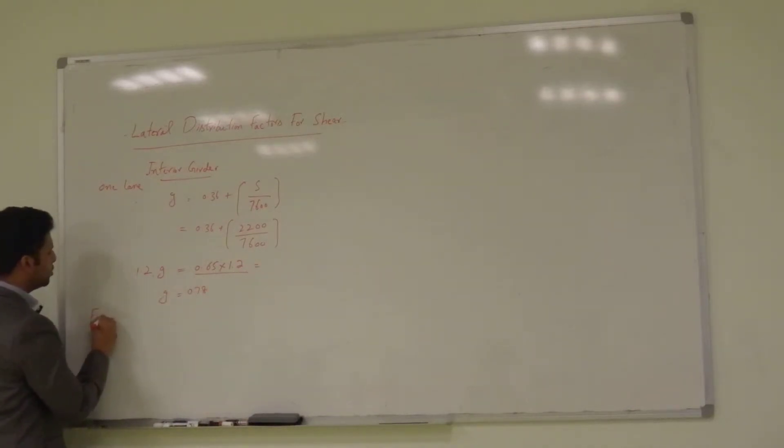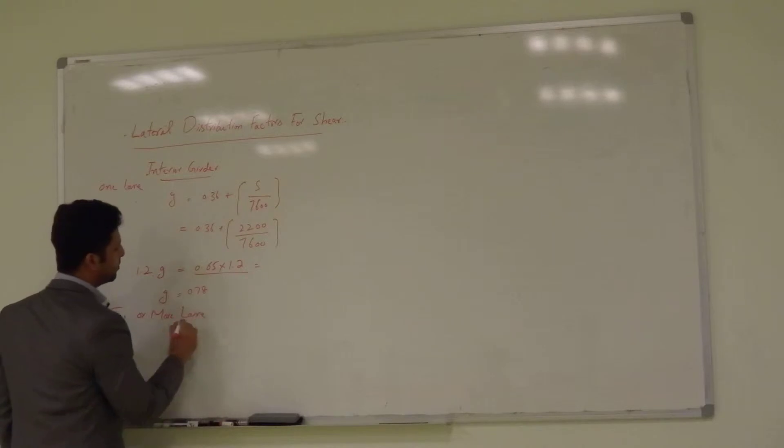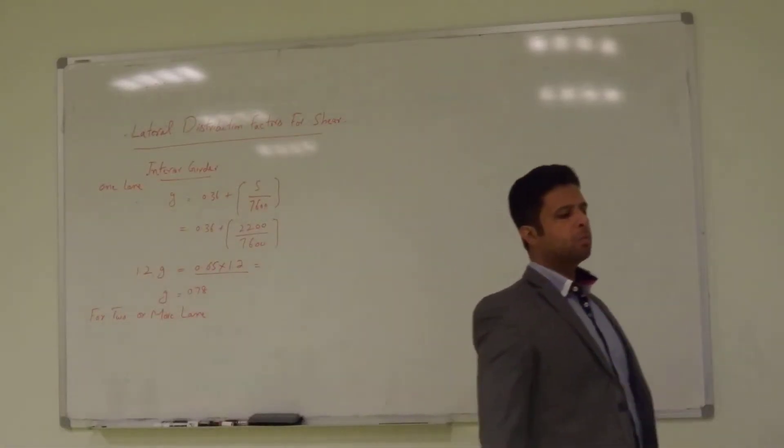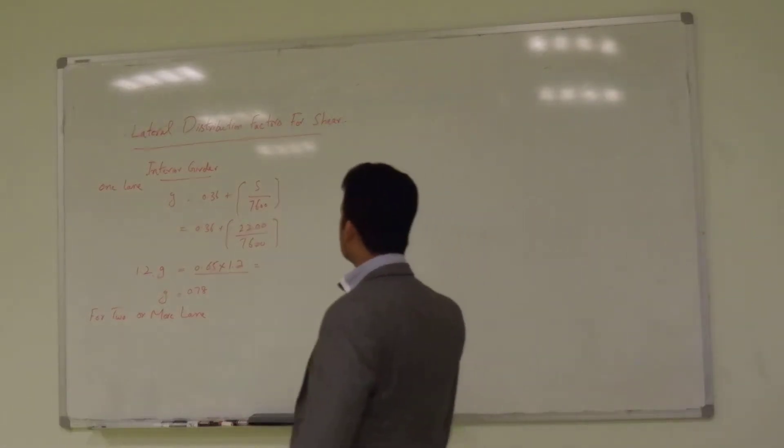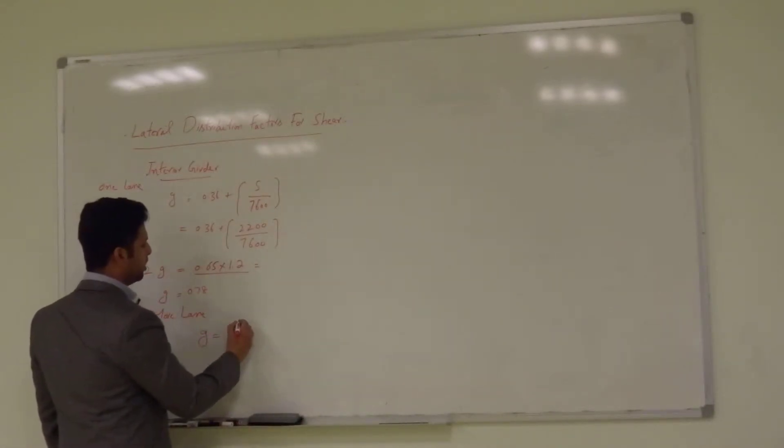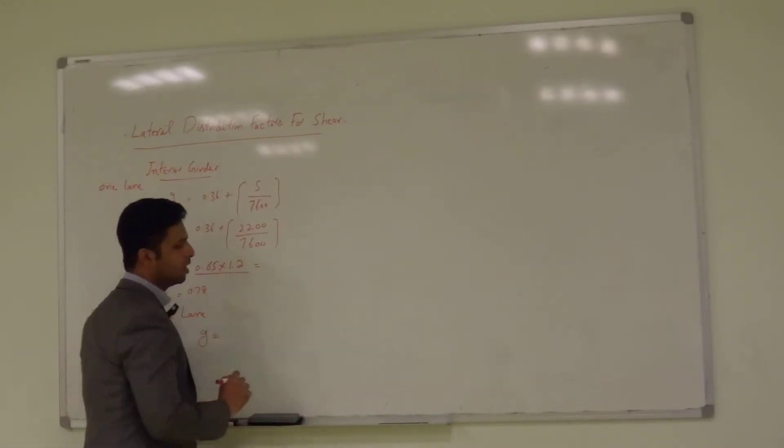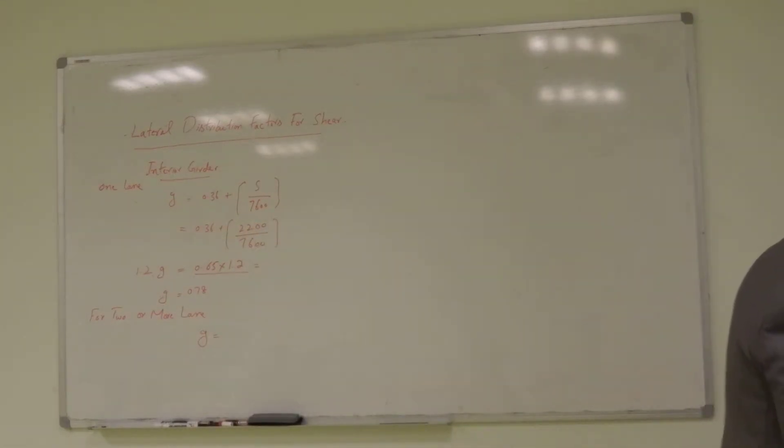Now, for multiple lane for 2 or more lane loaded, M is equal to 1. But what is the equation for G? G is equal to 0.2. G is equal to 0.36 plus,